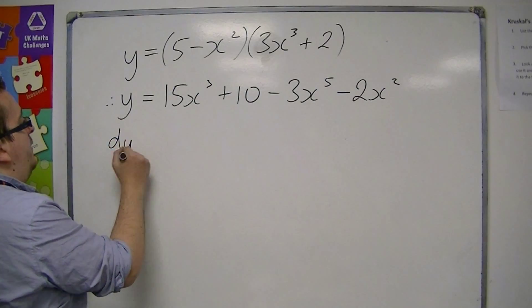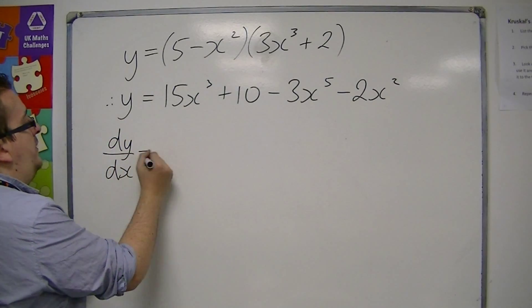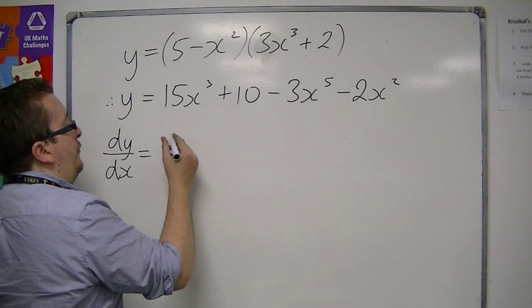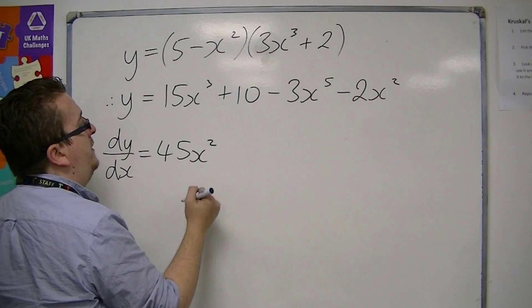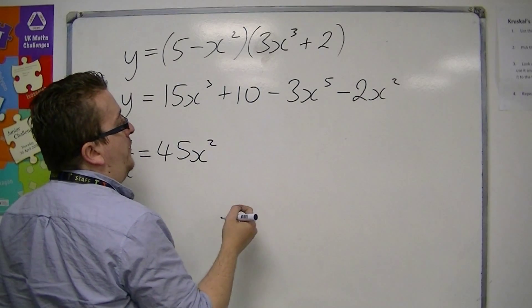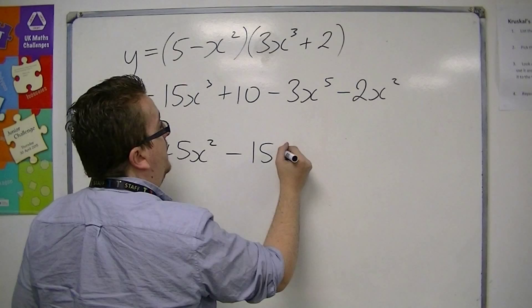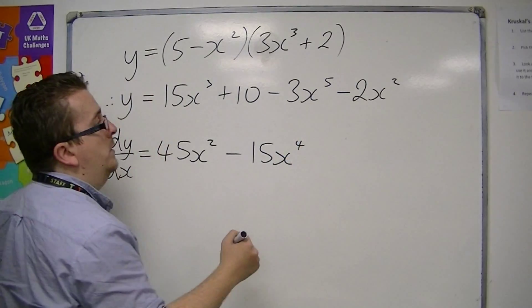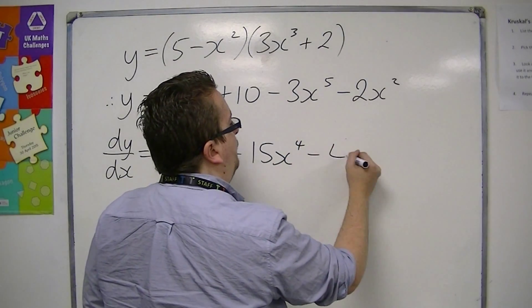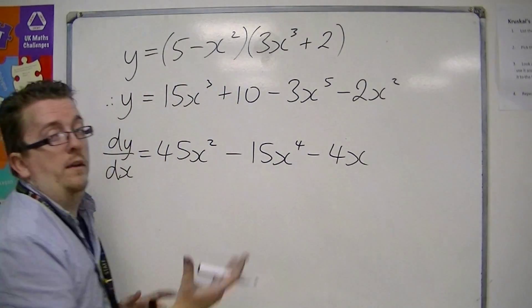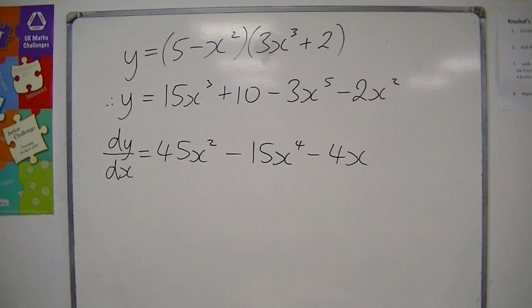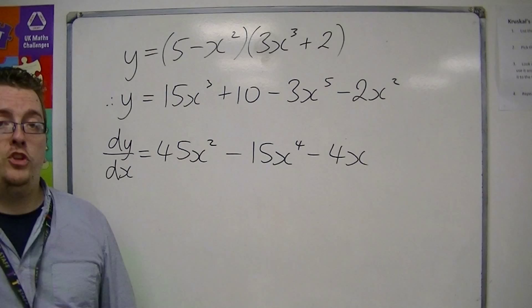Once it's been expanded like that, you are ready to differentiate. dy by dx is equal to 3 lots of 15 is 45, x squared. The 10 differentiates to 0. Then we've got minus 15x to the 4, and then minus 4x. And that is how we have differentiated it.